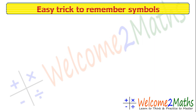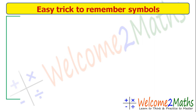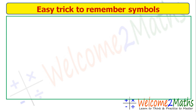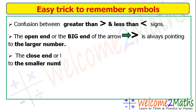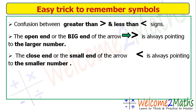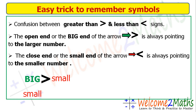Now I will tell you the easy trick to remember the symbols. We often confuse greater than and less than. The trick is: the open end or big end of the arrow always points to the larger number, and the closed end or small end always points to the smaller number. So the big number is always greater than the smaller number, and the small number is less than the big number.